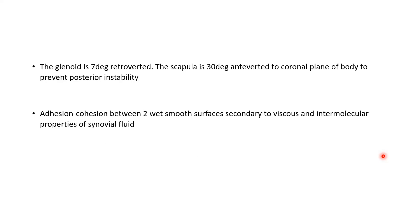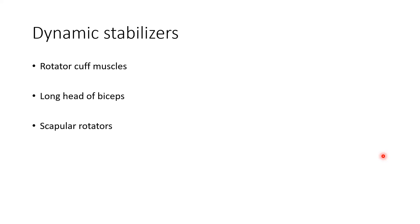The glenoid is 7 degrees retroverted, and the scapula is 30 degrees inverted to the coronal plane of the body to prevent posterior instability. Adhesion cohesion is between two wet surfaces due to the viscous and intermolecular properties of synovial fluid. The dynamic stabilizers are the rotator cuff muscles, long head of biceps, and scapular rotators.